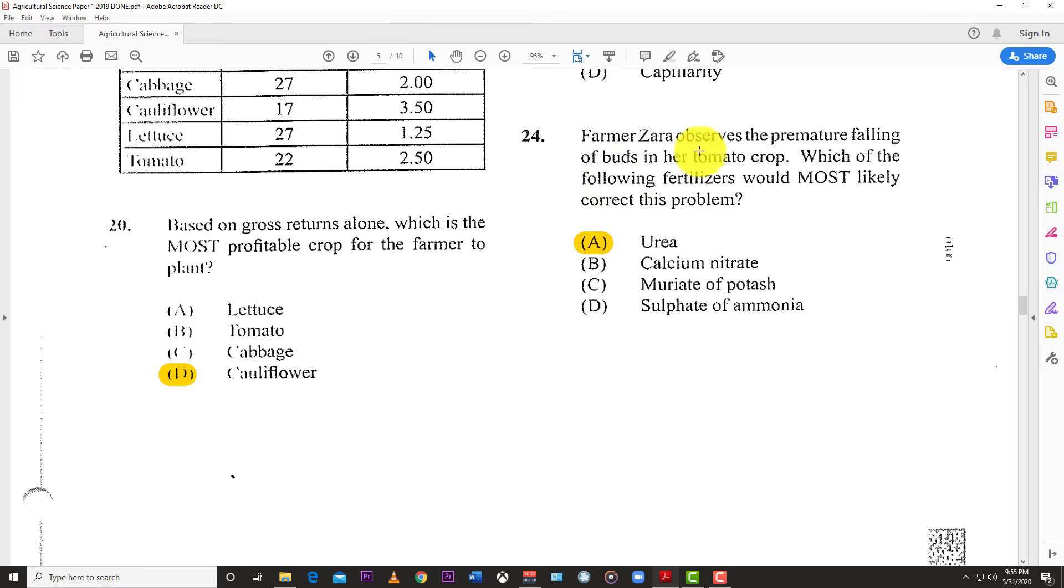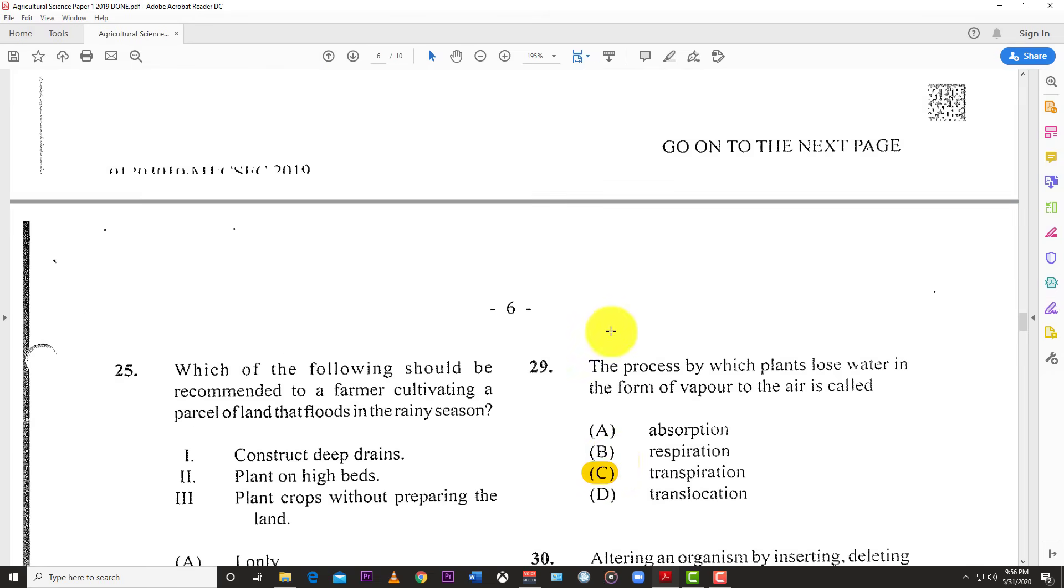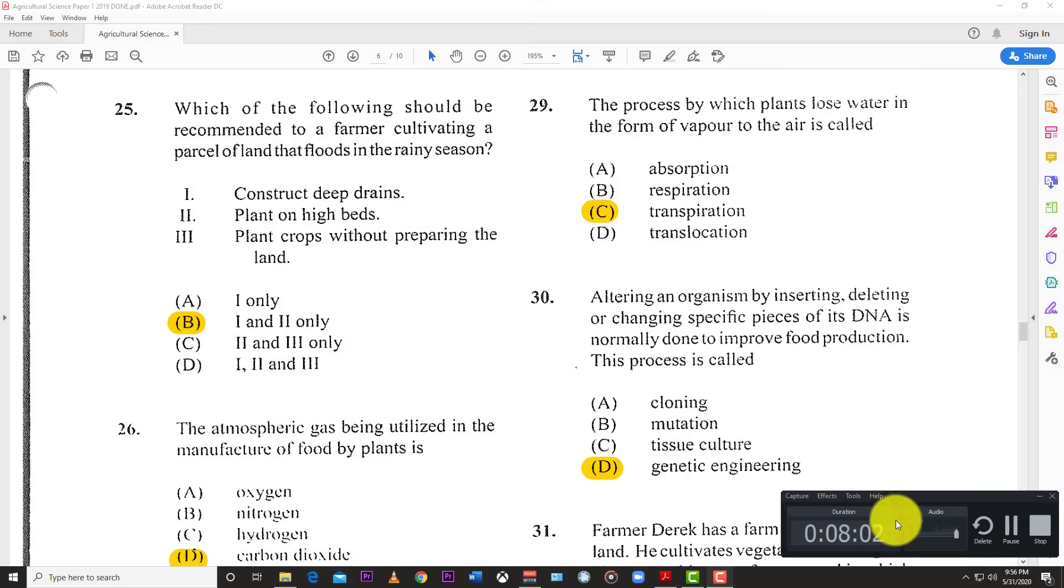Number 24: Farmer Zara observed premature falling of buds in her crop. Which fertilizer would most likely correct this problem? This is tricky - the answer is urea because it's filled with nitrogen, and lack of nitrogen can cause falling of buds. Though excess nitrogen can also cause this, we're going with the fact that there's not enough nitrogen, so add urea to the soil.